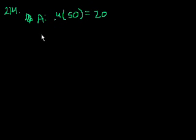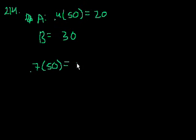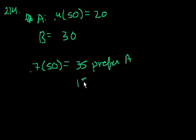And the remaining 60% to team B. So B gets the remaining 60%, which is 30 people. 60% of 50 is 30. However, 70% of the researchers prefer team A, and 30% prefer team B. So 70%, which is 35, prefer A, and 30% prefer team B. So the remainder, which is 15, or 30% of 50, prefer B.